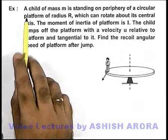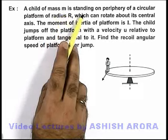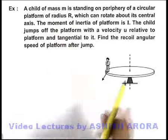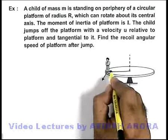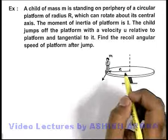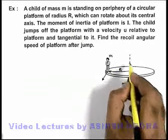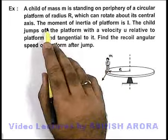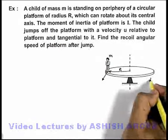In this example, a child of mass m is standing on the periphery of a circular platform of radius R. This platform can rotate about its central axis. The moment of inertia of the platform is I.